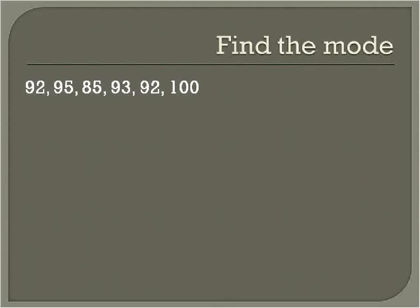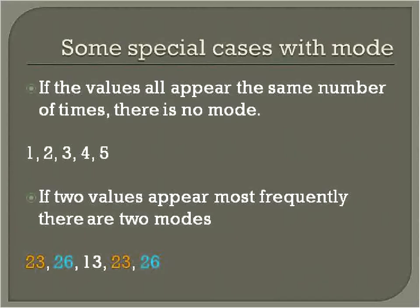Let's use this list of numbers to find the mode. We have 92 appearing once, twice. We have 95 just one time, 85 just one time, 93 just one time, and 100 just one time. So 92 is going to be the mode in this list — it's just whichever number appears the most.